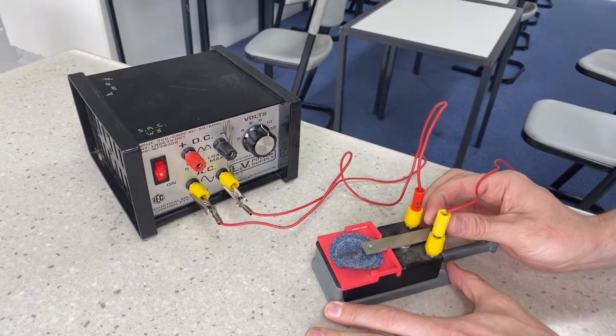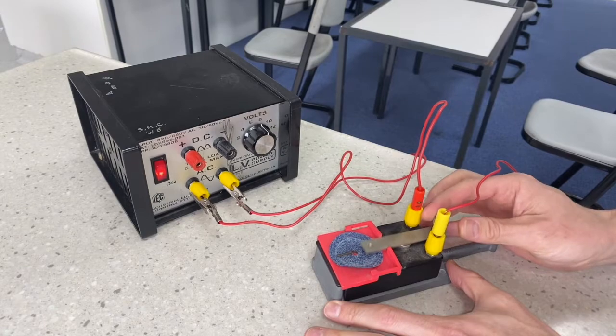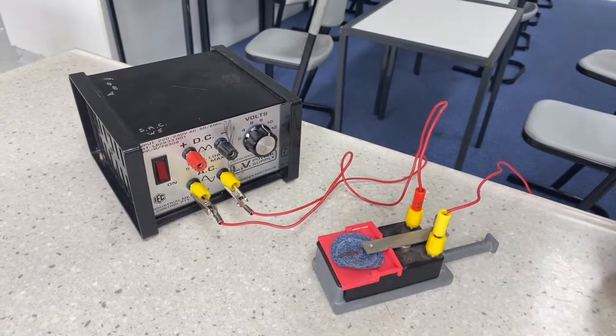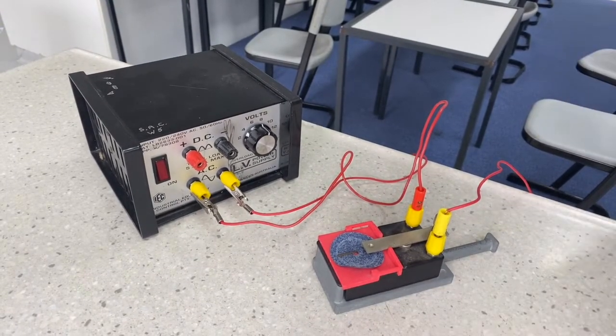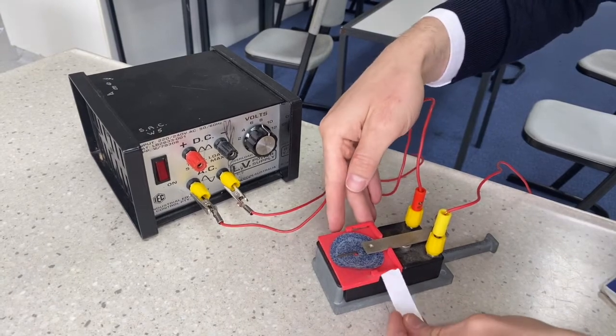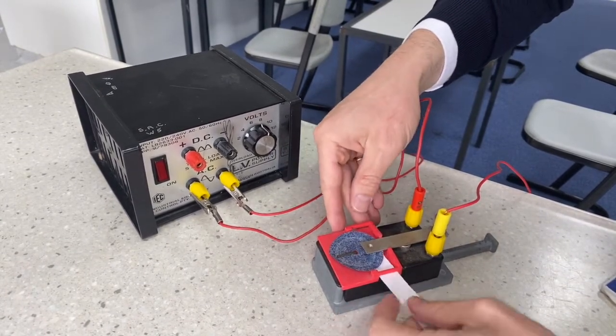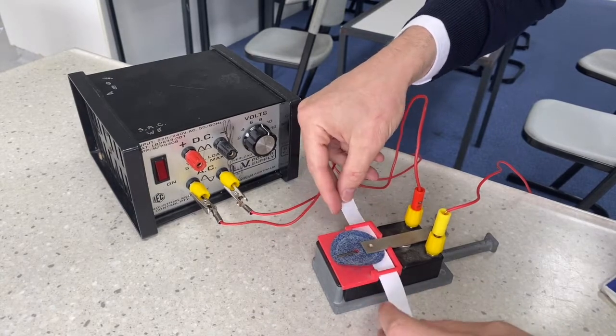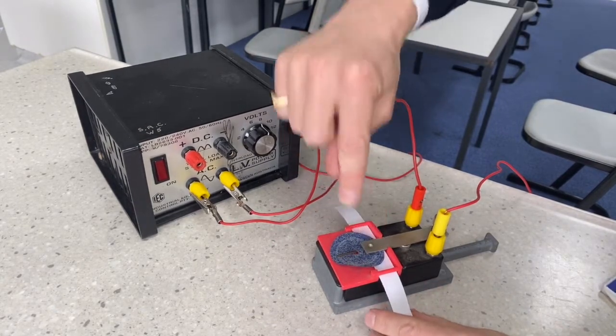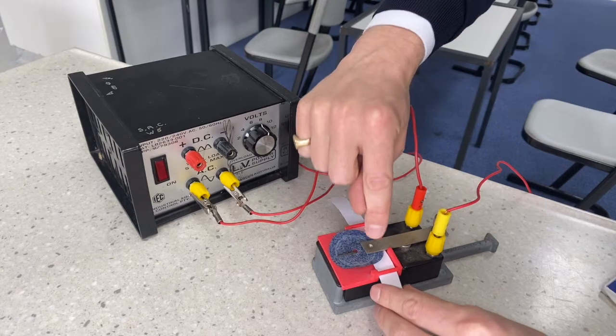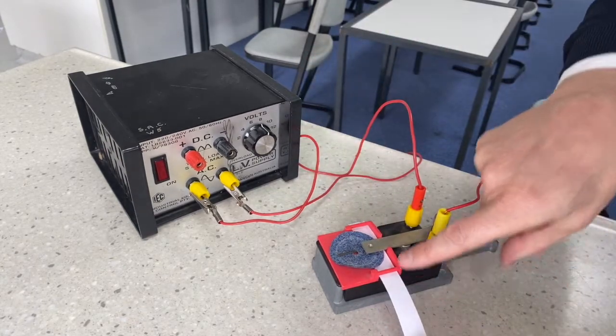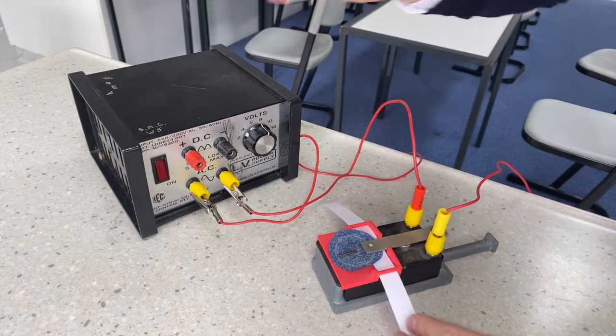What we need to do is thread our ticker timer tape through this little slot there and under the ink pad, so that when the bar taps, it taps onto the ink pad and onto the paper. You can see it's carrying these little dots, so I'll just give you a little demo here.